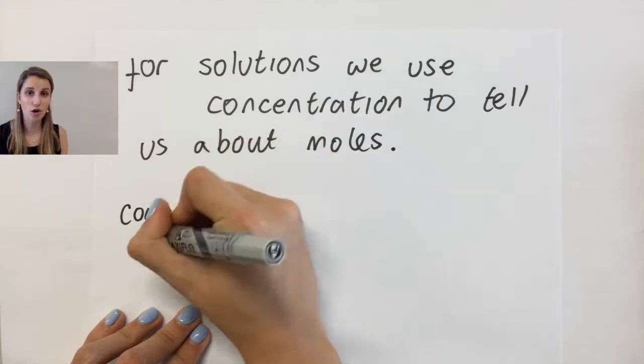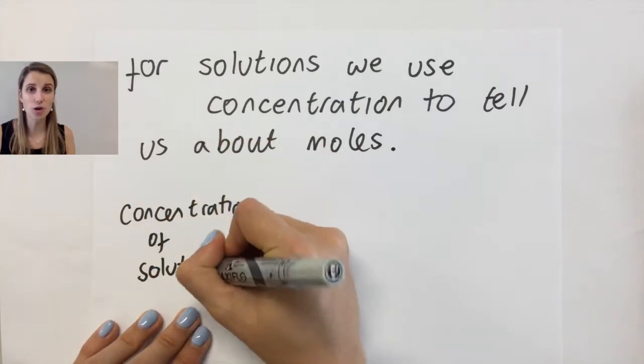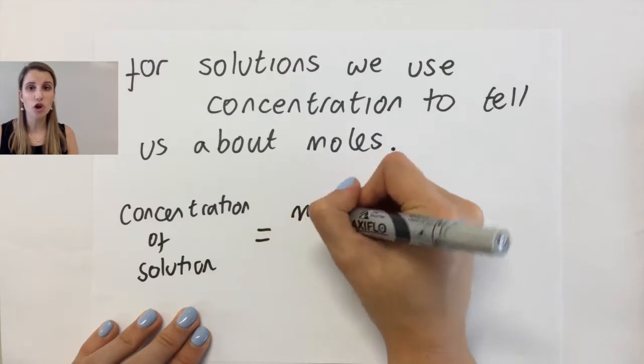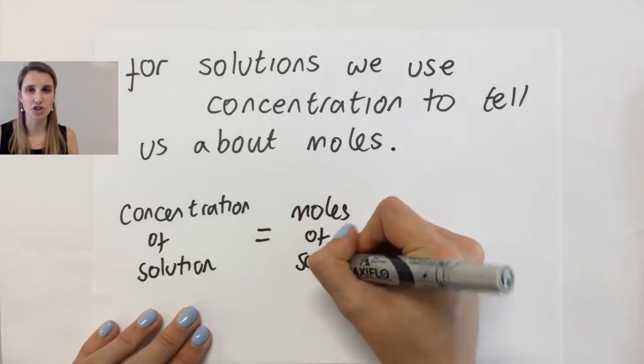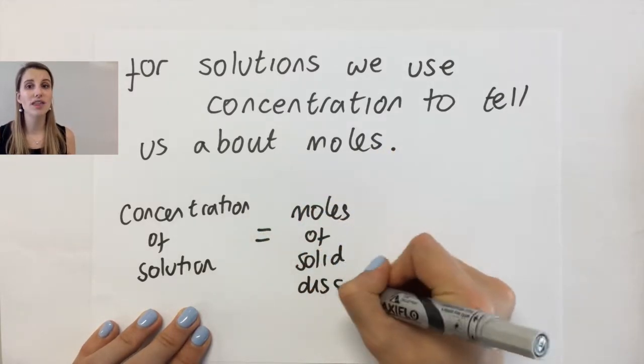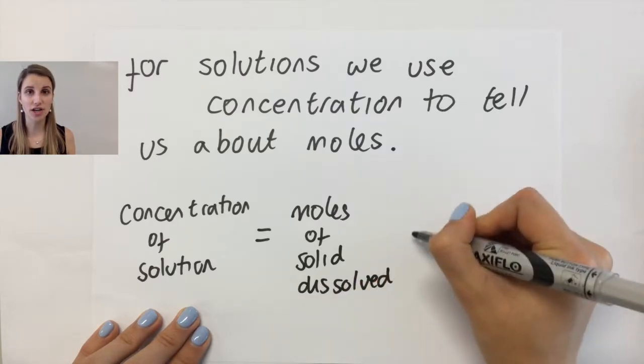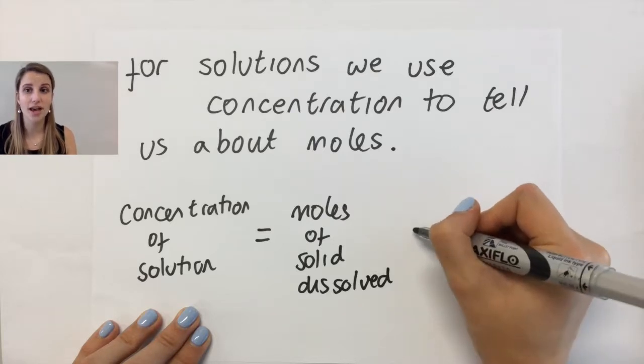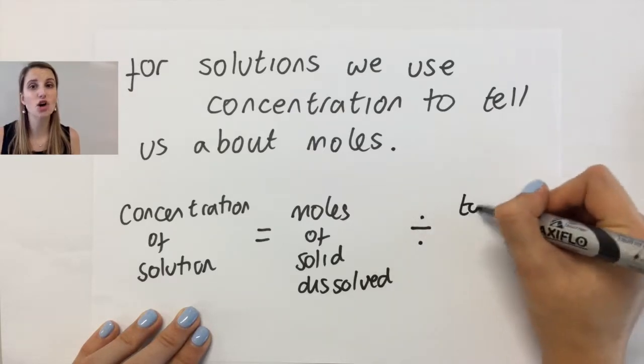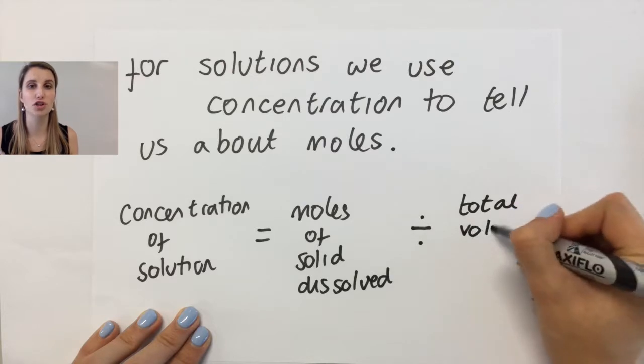The concentration of any solution equals the moles of the solid that you dissolved originally. So normally the way that we make a solution is we take a solid and we dissolve it in some liquid and overall you get your solution as a result. So you take the moles of that solid that you dissolved and you divide it by the total volume of the solution that you've made.